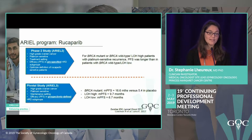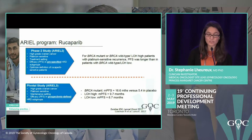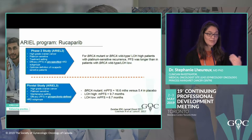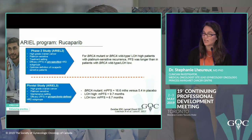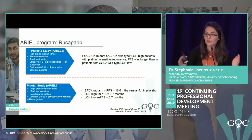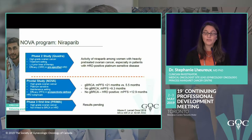Rucaparib was assessed in a phase 2 trial showing BRCA mutation patients benefit. A large phase 3 maintenance trial in platinum-sensitive recurrence used a specific HRD test to identify who benefits most. BRCA mutation patients clearly benefited, and the LOH marker may help distinguish non-BRCA patients who also benefit from maintenance.